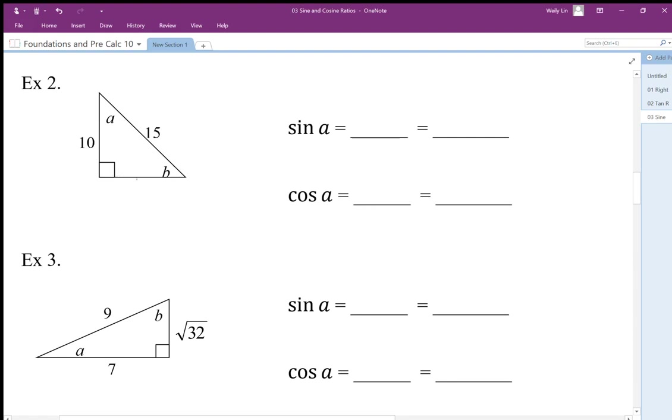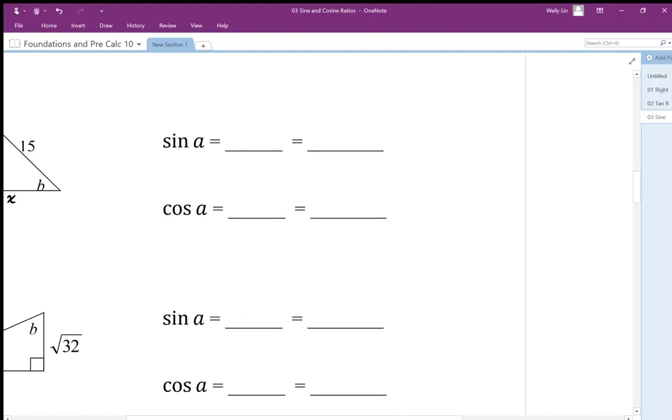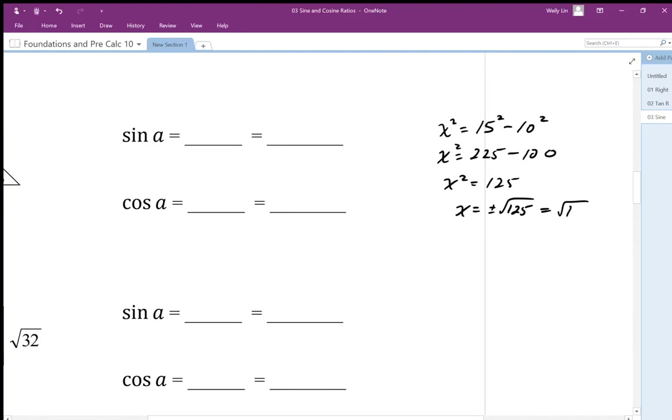Using Pythagoras, I'm going to solve for this unknown side. In trig, we're going to use Pythagoras quite a bit because we are dealing with right-angled triangles. So I'm going to have x squared is equal to, it's one of the shorter sides, so I'm going to subtract from the longest side. 15 squared minus 10 squared. So 225 minus 100. So x squared equals 125. So x works out to be plus minus 125. And since we're dealing with length, we'll just use 125.